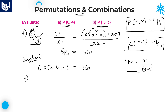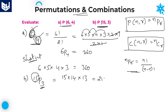For P(15,3), which is nothing but 15P3: starting from 15 onwards, write 3 numbers in decreasing order — 15 into 14 into 13. That gives the value of 15P3. Calculating: 15 into 14 equals 210, and 210 into 13 equals 2730. So 15P3 equals 2730.